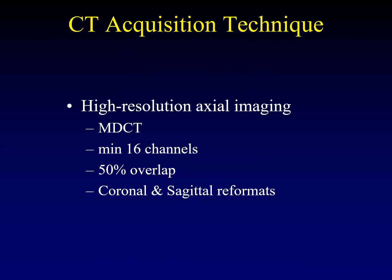When we perform CT of the temporal bone, it's important to do it with high-resolution imaging using a multi-detector CT scanner. You want a minimum of 16 channels on your CT — 64 is really optimal. Remember that it's important to overlap your slices. If you are doing 0.6 millimeter slices, you want the inter-slice distance to be only 0.3 millimeters, half the thickness, so that there is a lot of overlap between the slices. This will make much more attractive reformatted images.